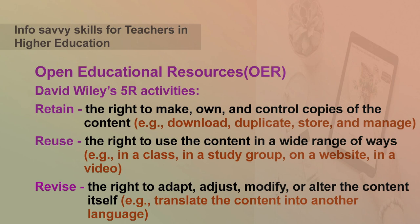The first R is Retain — the right to make, own, and control copies of the content. For example, one can download, make duplicate copies, store, and manage these resources.